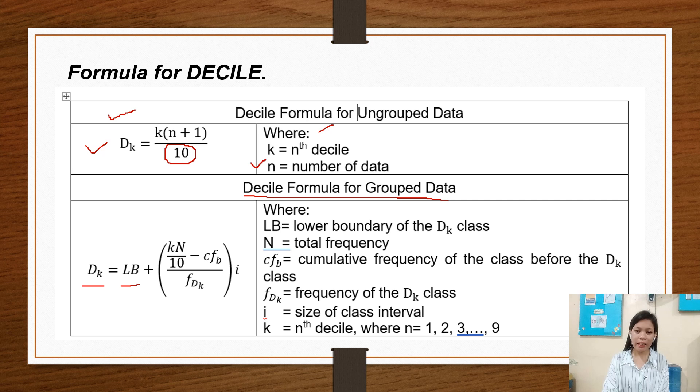Where LB is the lower boundary of the D sub K class, N is the total frequency, CFB is the cumulative frequency of the class before the D sub K class, F D sub K is the frequency of the decile class, and i is the size of the class interval.